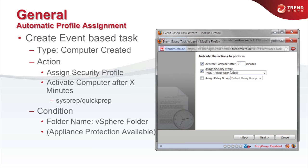The next step is to specify the action — in our case, assigning a profile and activating the machine. There is a differentiation between assigning a profile and activation because a profile can be assigned although the machine is not yet capable of enforcing it, for instance because it has not yet booted up or because the VMware tools have not been started yet.